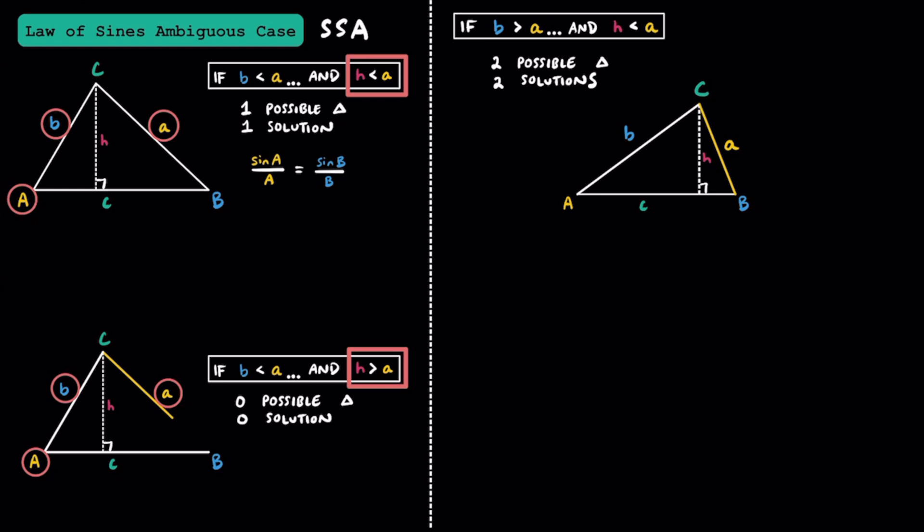That brings us to our ambiguous case. Let's say we're given angle A, the adjacent side b, and the opposite side length a. Notice how in this scenario, side b is longer than side a, and side a is longer than the height of the triangle. In this scenario, we can actually draw two possible triangles and could have two solutions. If these are the only three bits of information we're given, side a could be drawn where it is, but it could also be drawn over here.